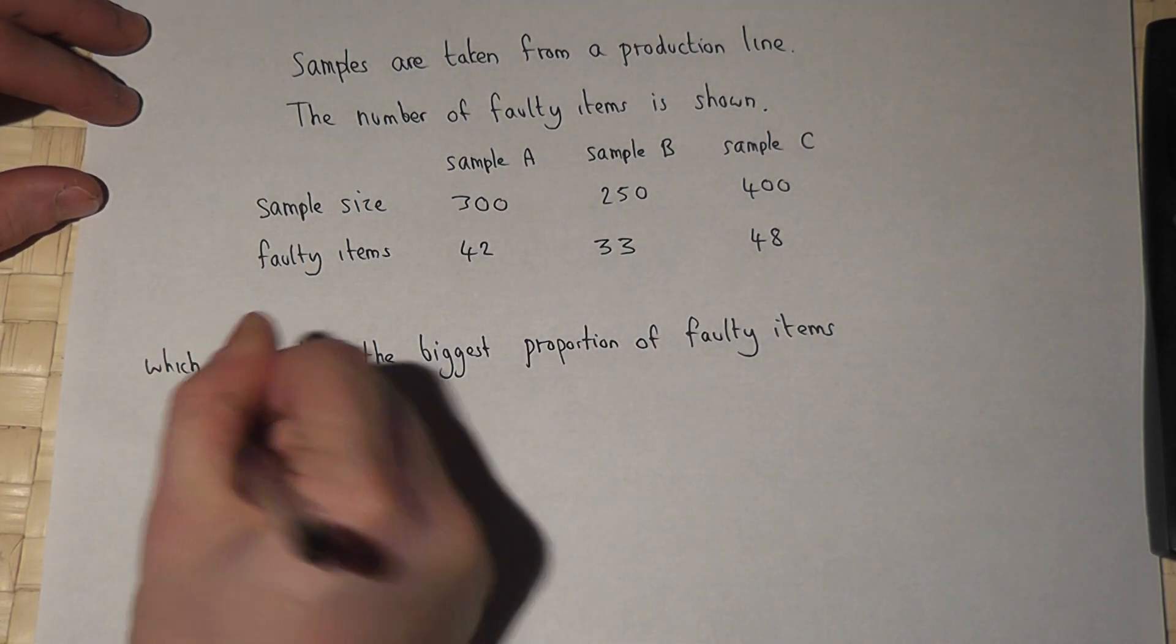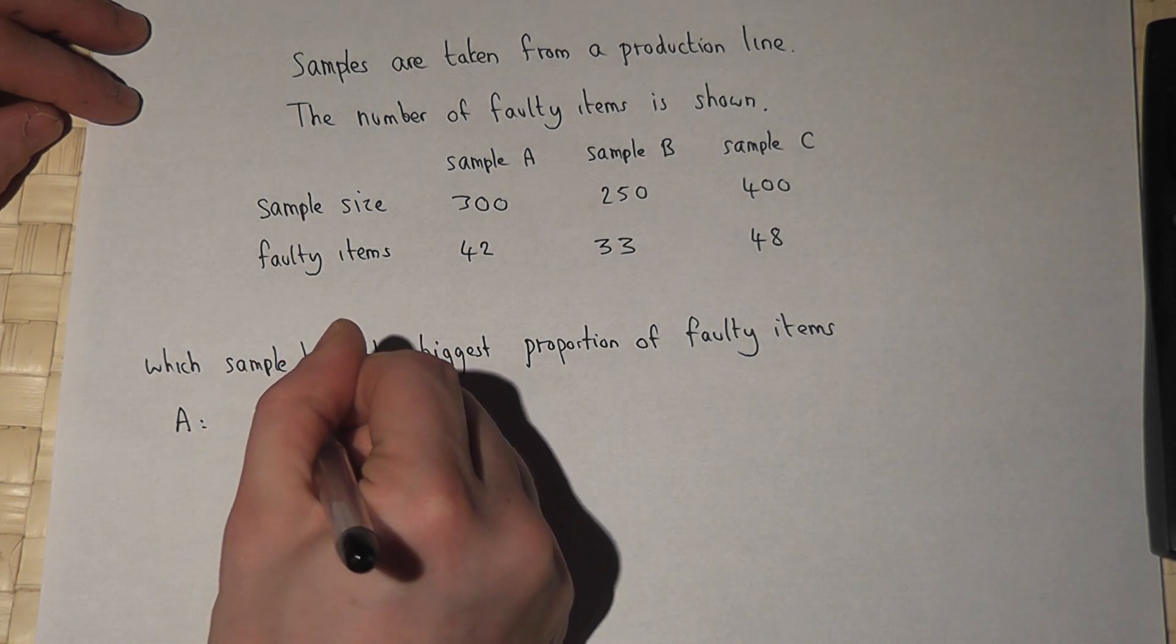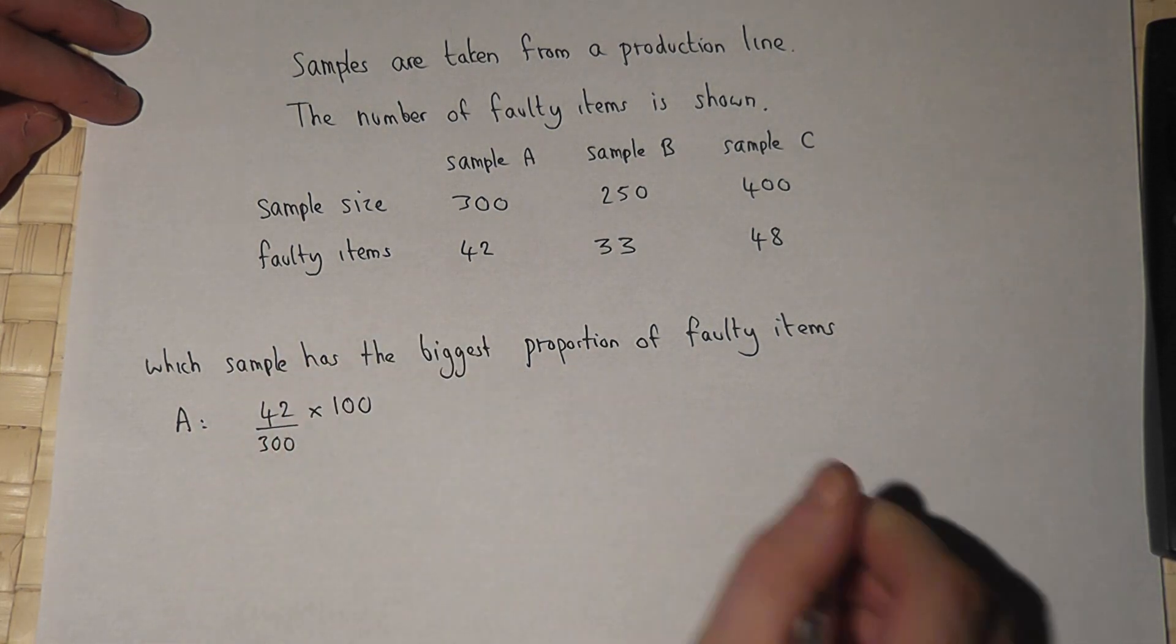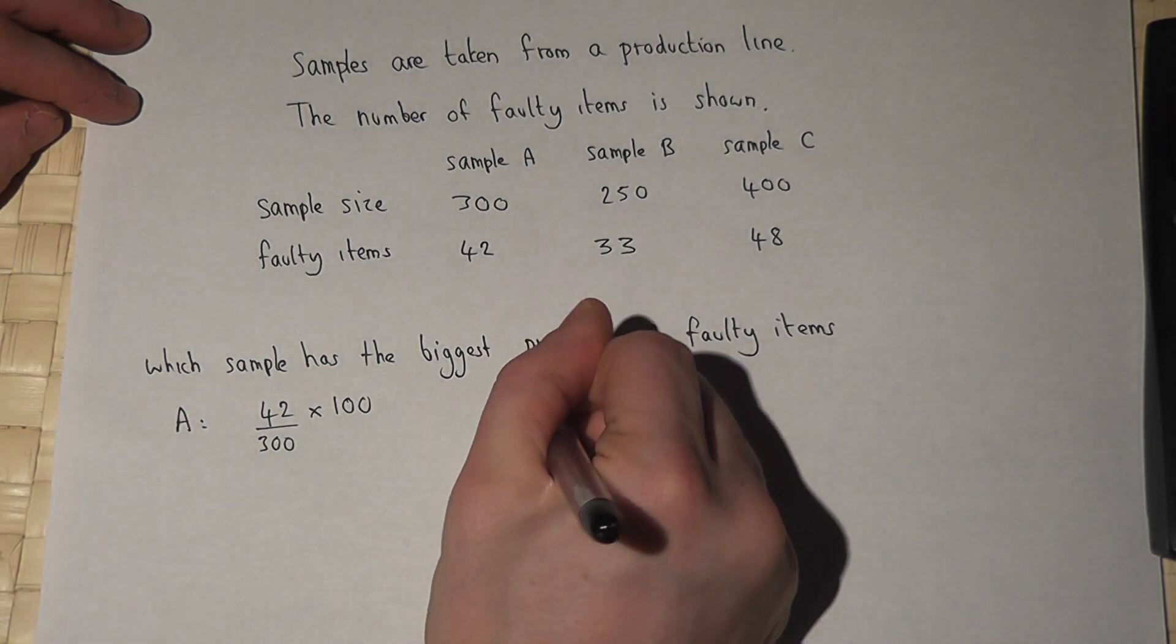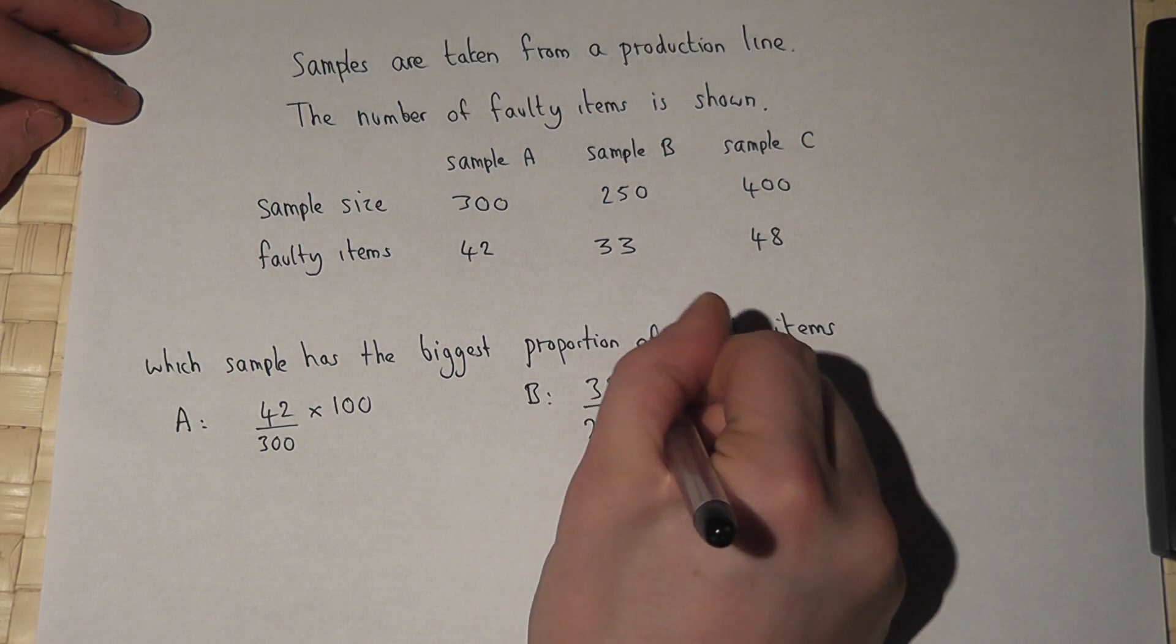In sample A, the percentage is 42 out of 300, times 100. In sample B, it's 33 out of 250, times 100.